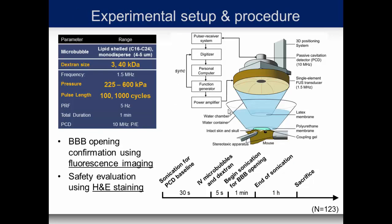For the experimental setup, we are using anesthetized mice — doing things in vivo. The transducer is positioned above with a water medium coupling to the intact scalp and skull of the mouse. We perform a 30-second sonication with passive cavitation detection recorded simultaneously. We administer the microbubbles and dextrans intravenously to vary the size of the molecule, and begin sonicating to open the blood-brain barrier for one minute. After one hour we sacrifice the animals. These are our different pressure ranges and different dextran sizes.